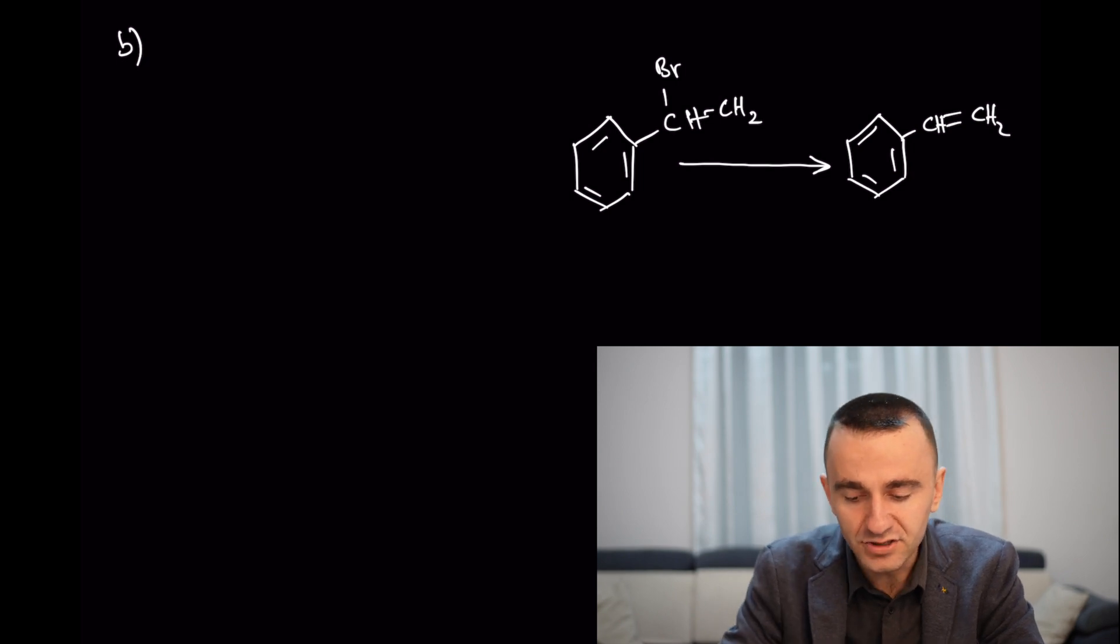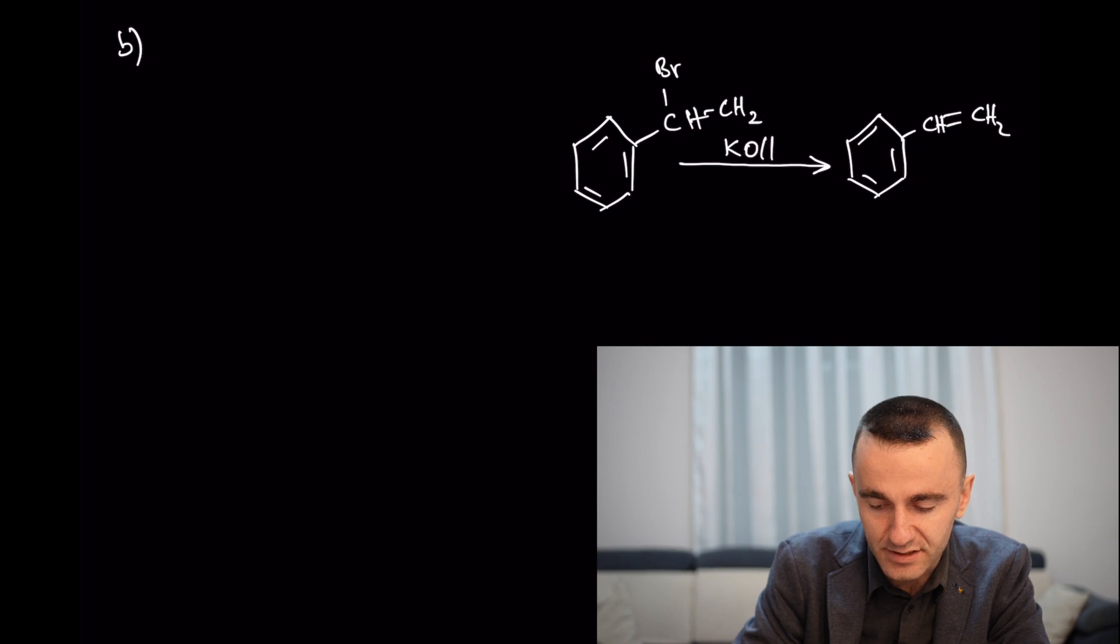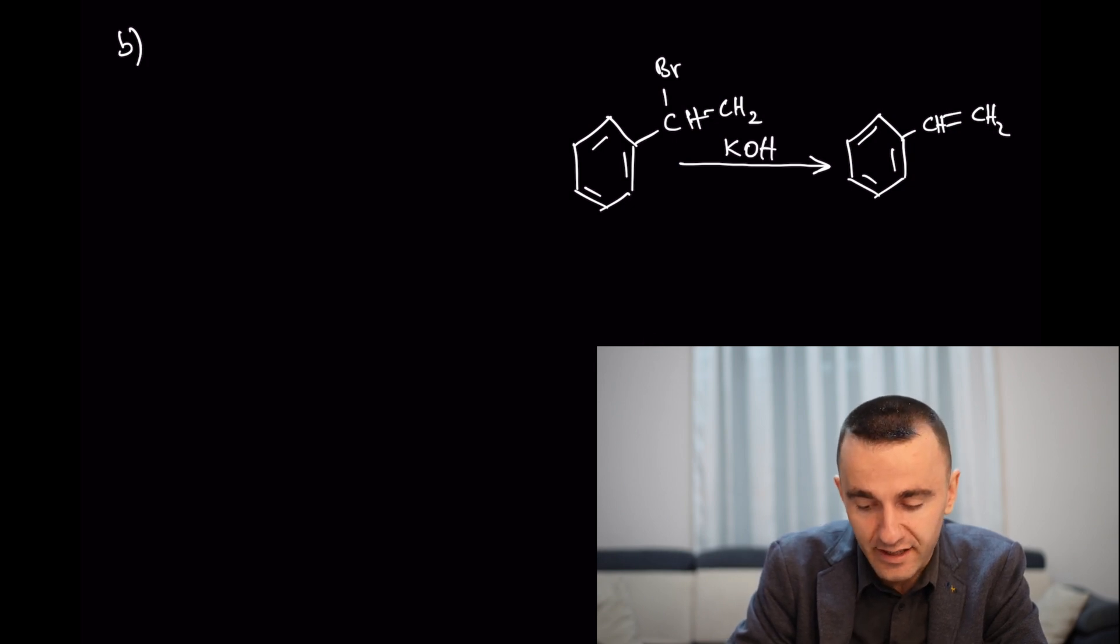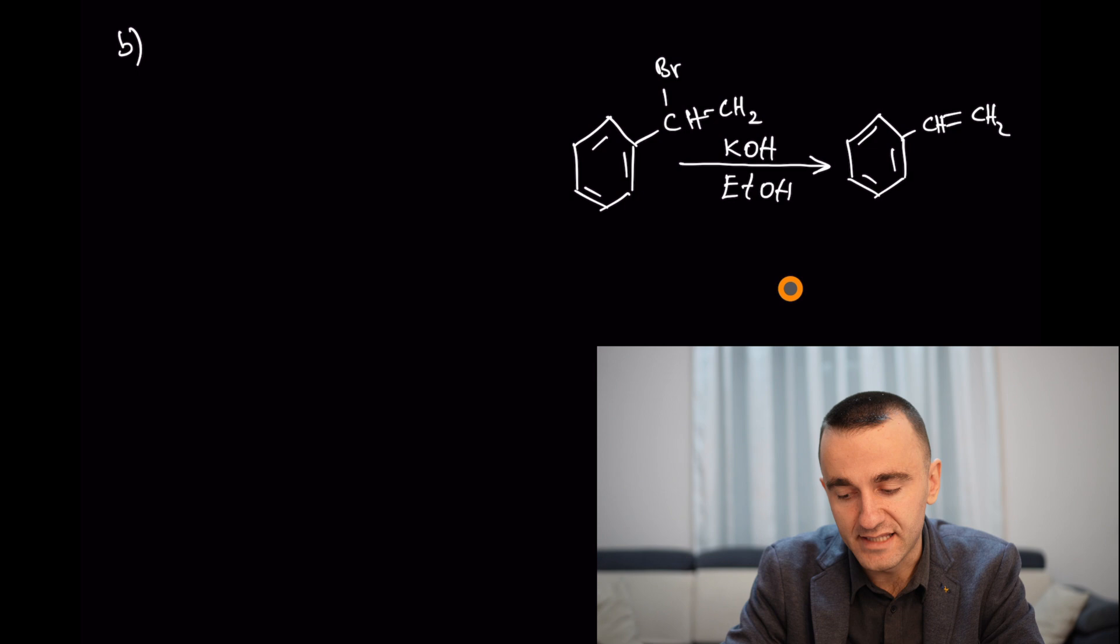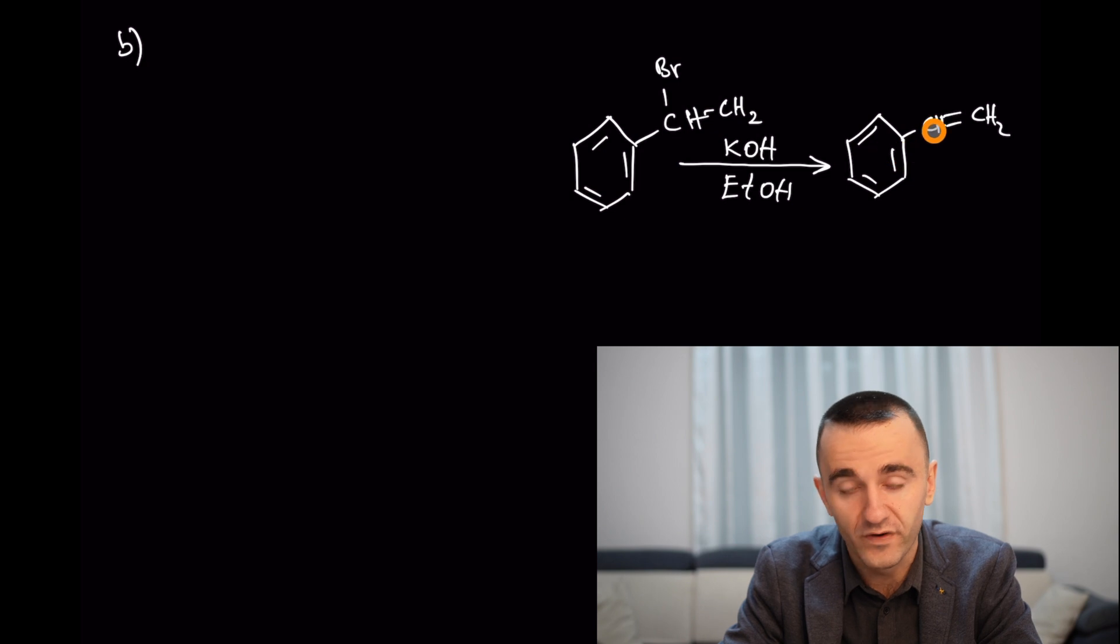Elimination of this bromine can be done by a strong base such as potassium hydroxide in ethanol to yield this double bond, styrene.